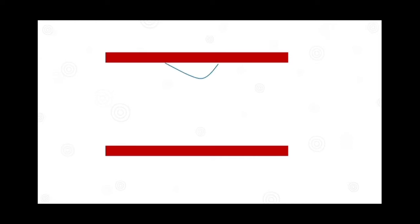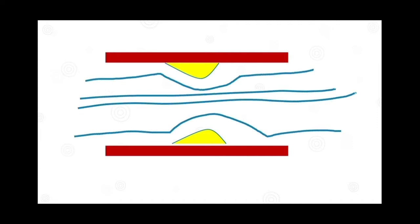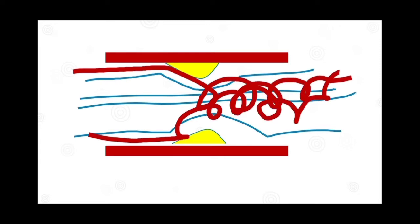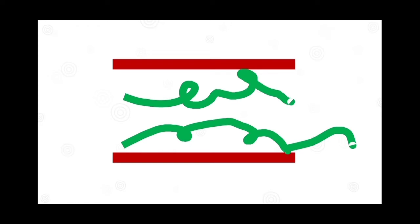Now imagine a blood vessel containing plaque. The blood will flow with a change in direction instead of going straight. Some blood streams undergo turbulence — they hit the plasma and create a turbulent flow. When this happens, certain areas become devoid of blood flow; these areas are called areas of stasis.